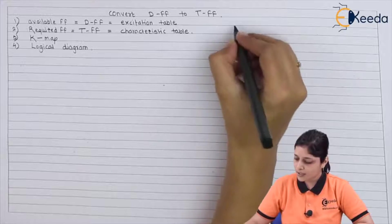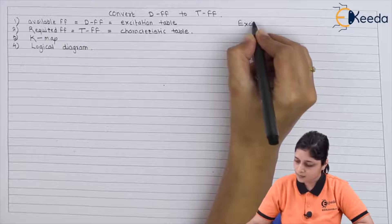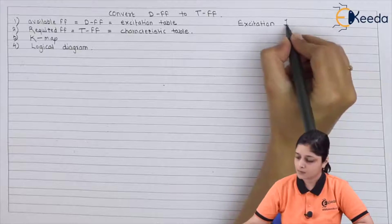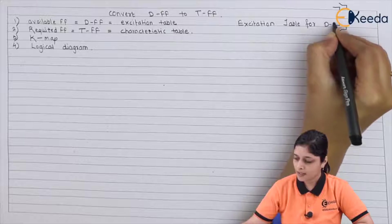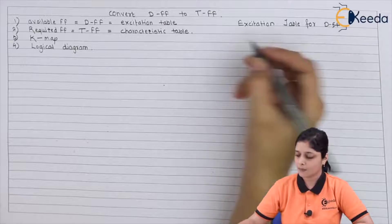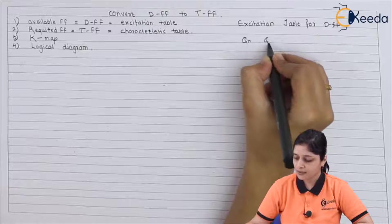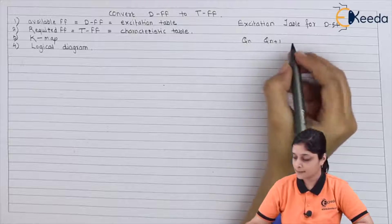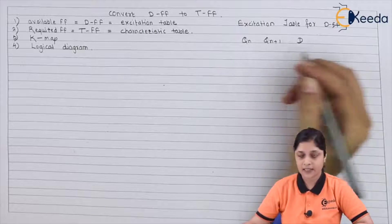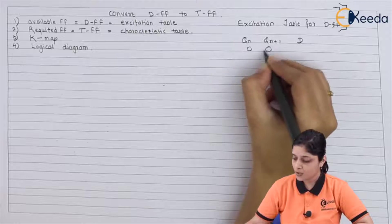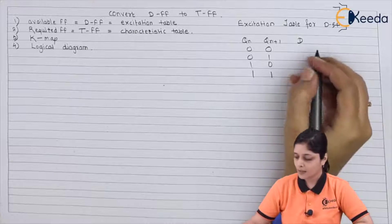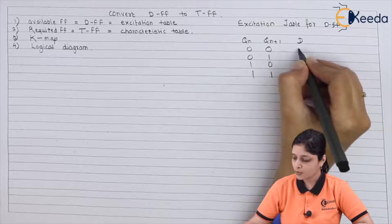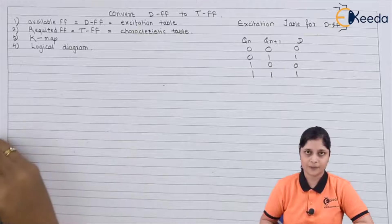The first step is to draw the excitation table for D flip-flop. At the input side, you have Qn, Qn+1, and then D. So 0 0, 0 1, 1 0, 1 1. D equals directly 0 1 0 1. Directly you have to write the excitation table.